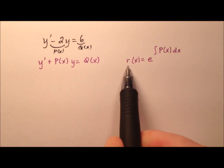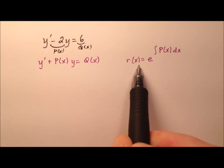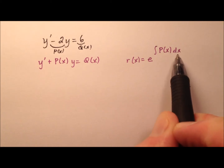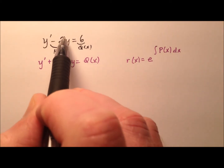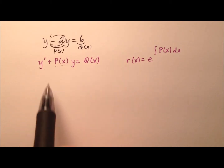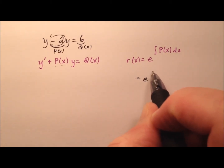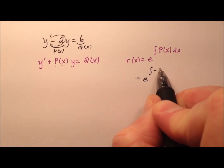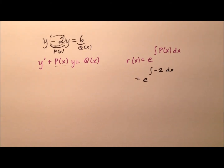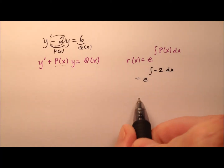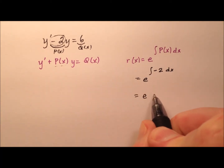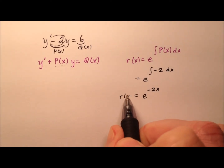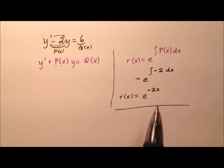We have this expression r of x, which we're going to call the integrating factor, and it's going to be e to the power of the integral of p of x dx. Whatever function in x is with the y is going to be important, because we have to integrate that and put it as a power of e. Since negative 2 was our p of x, we integrate that with respect to x to get negative 2x. So our integrating factor r of x equals e to the negative 2x.